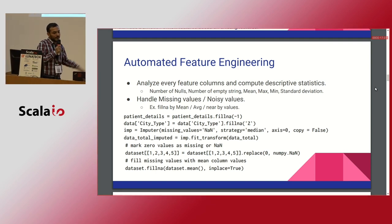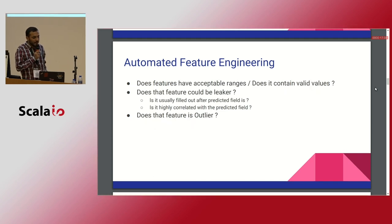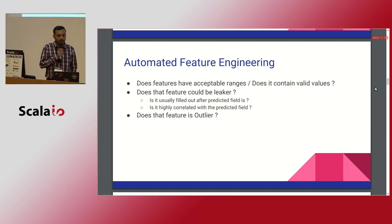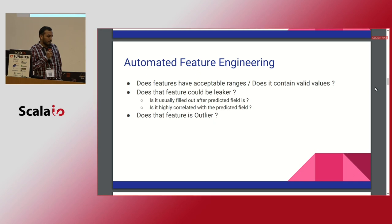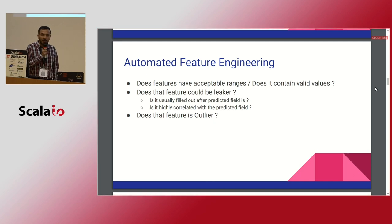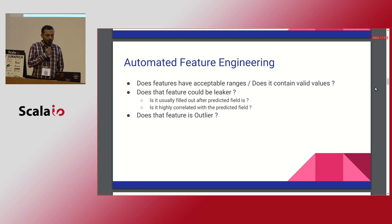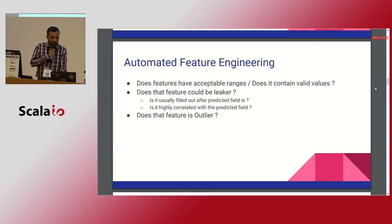Apart from that, you also check whether features have acceptable ranges, whether a feature could be a data leaker, whether it is usually filled after the predicted field, whether it is highly correlated with the predicted field, and whether that feature is an outlier. This is the entire process that you go through when working with algorithms in data science and machine learning.